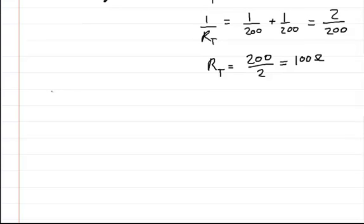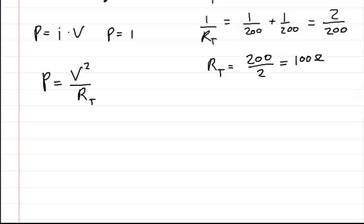So we're going to use this formula. There's a lot of formulas, but the one we're going to use is this one. Power is equal to the voltage squared divided by the resistance, the total resistance. Now there's a lot of power formulas, like power is equal to the current times the voltage. There's power is equal to the current squared times the resistance.